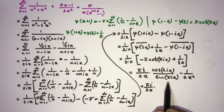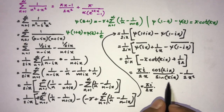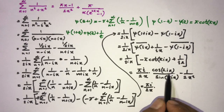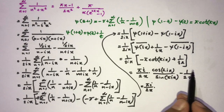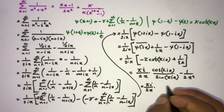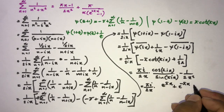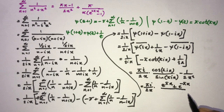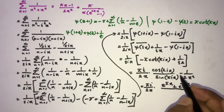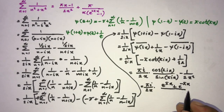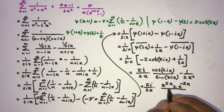Now we use the complex definition of the cotangent. We know cot(iπx) involves exponentials: cos(iπx) = (e^(πx) + e^(−πx))/2 and sin(iπx) = (e^(πx) − e^(−πx))/(2i), so cot(iπx) = i · (e^(πx) + e^(−πx))/(e^(πx) − e^(−πx)).